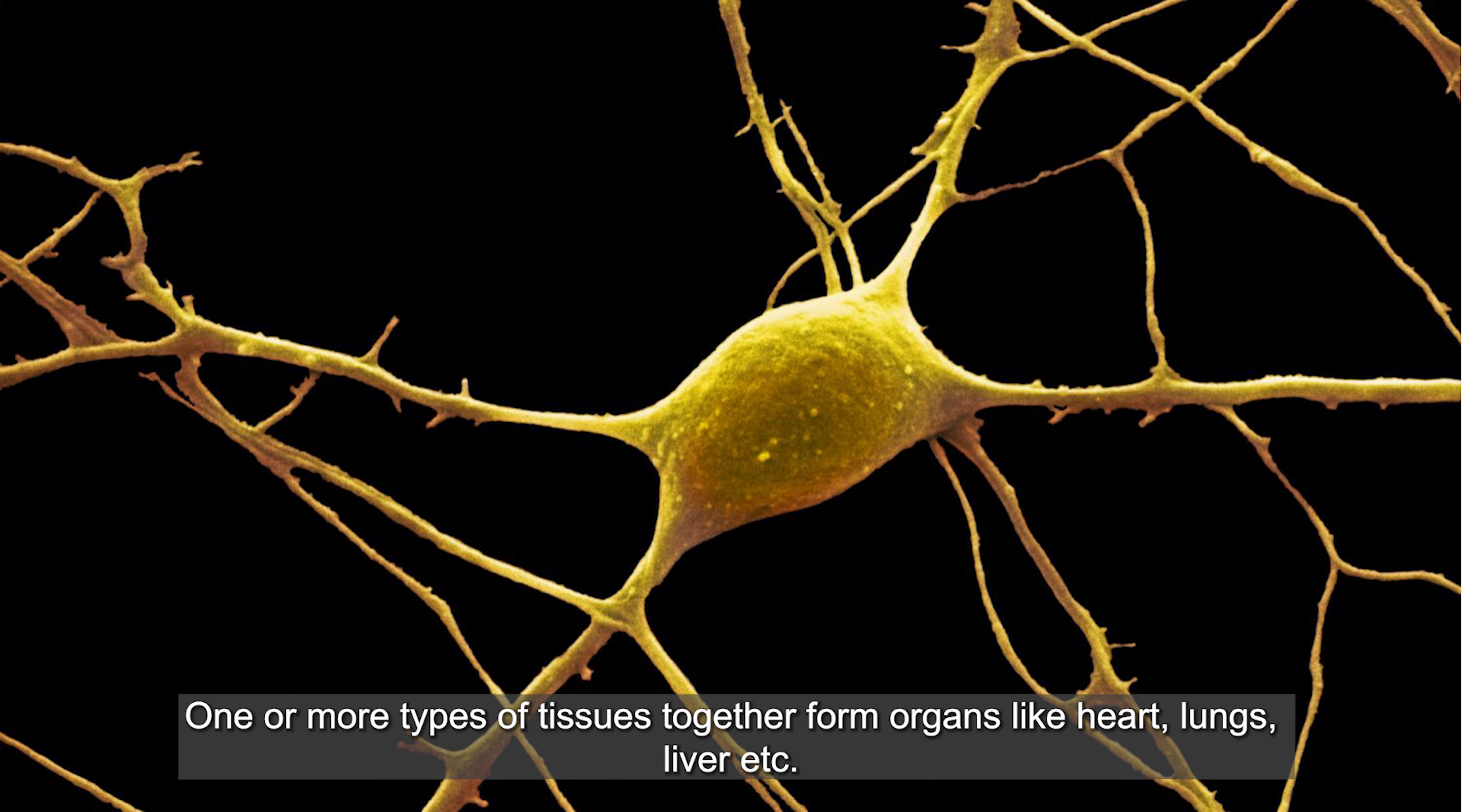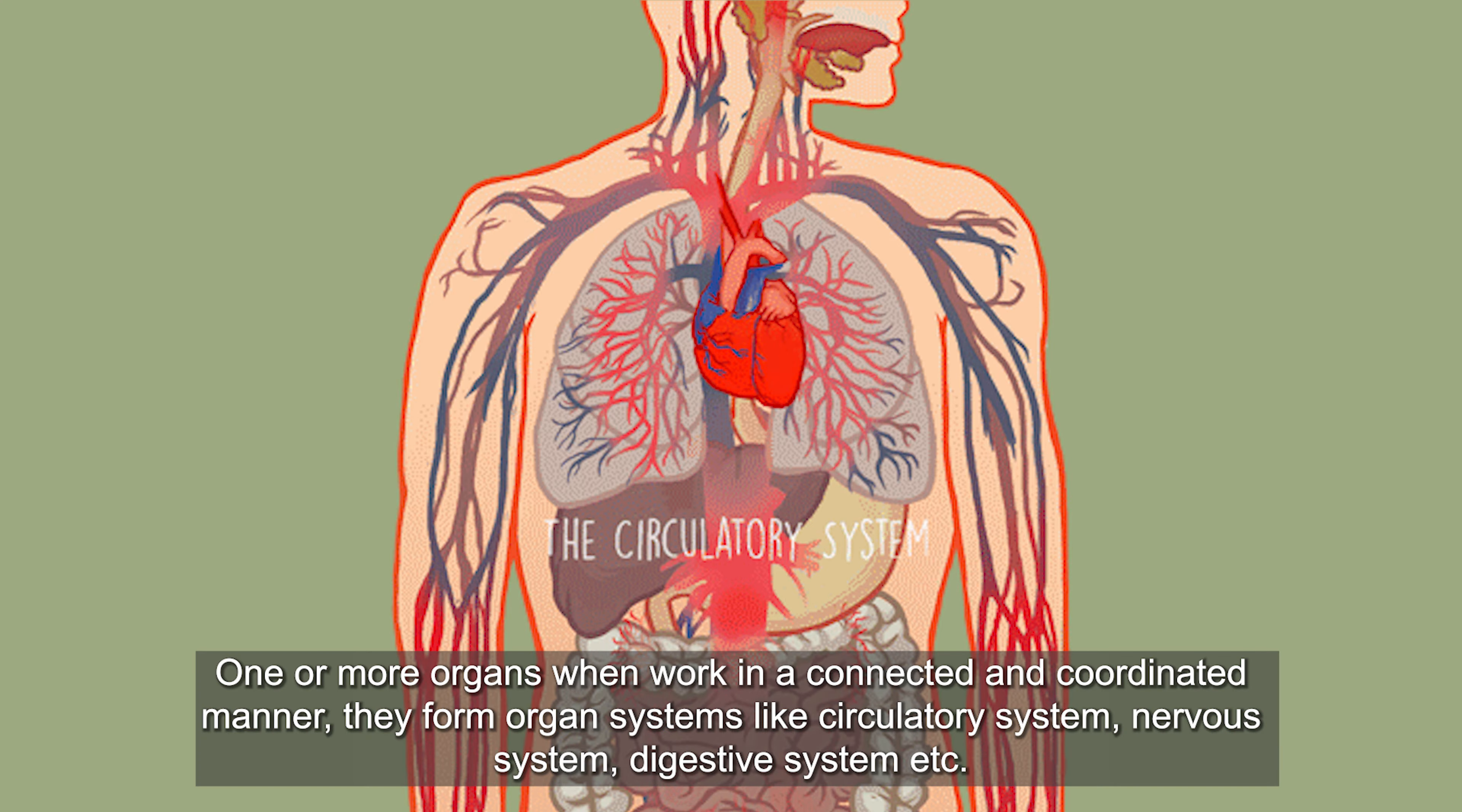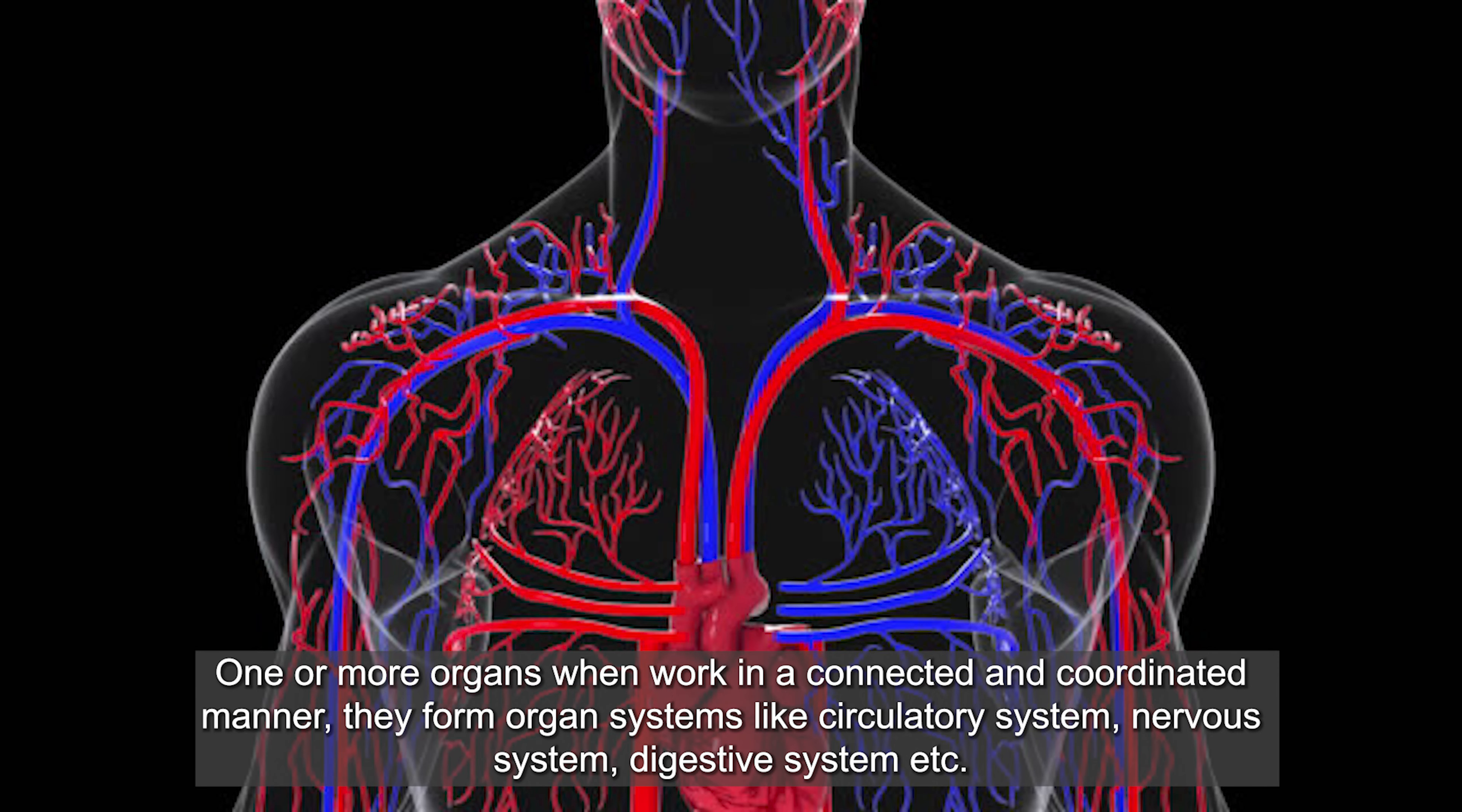Cells which perform similar or related functions combine to make tissues like muscle tissue, nervous tissue. And one or more types of tissues together form organs like heart, lungs, liver, etc.